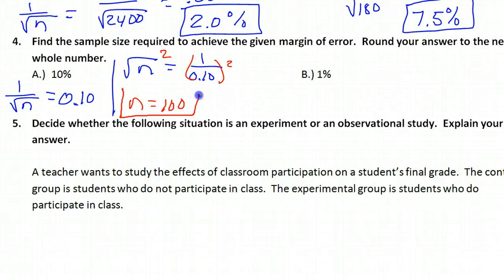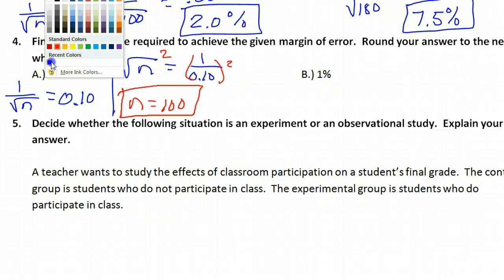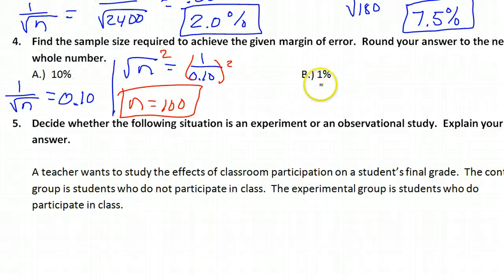That would have to be my sample size. Sample size of 100 is going to give me 10 percent. I'm betting this is going to be 1,000. Let's go through the motions. Once again, I know that 1 over the square root of n has to equal 0.01. That's 1 percent.